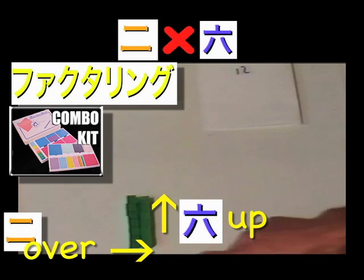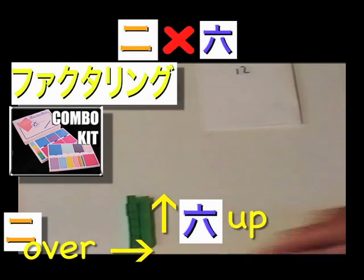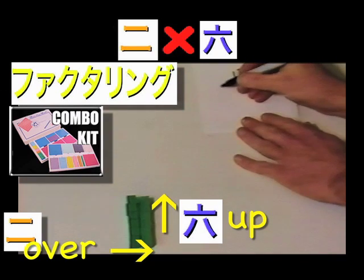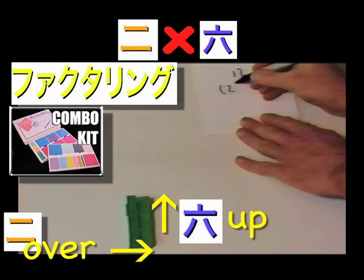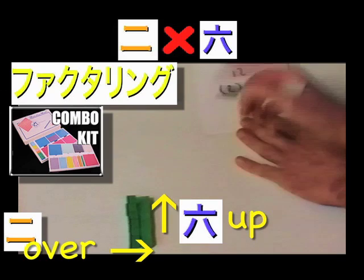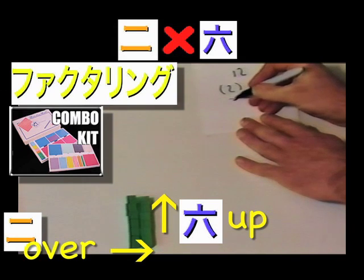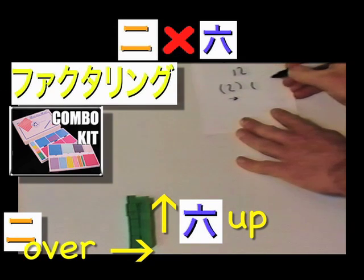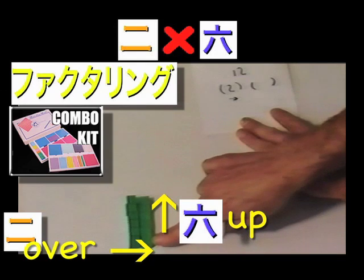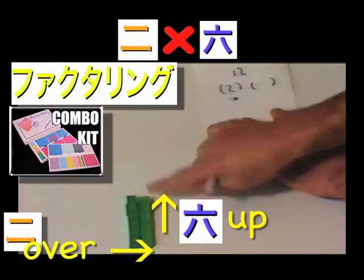What are the factors of 12 now? The factors are distance over, 2, and our distance up, 1, 2, 3, 4, 5, 6.